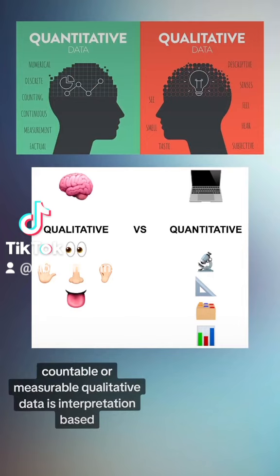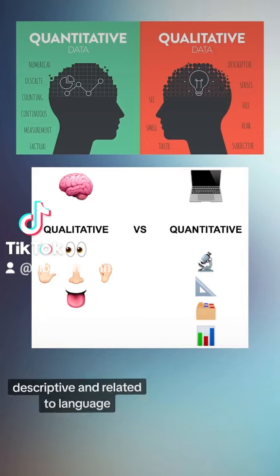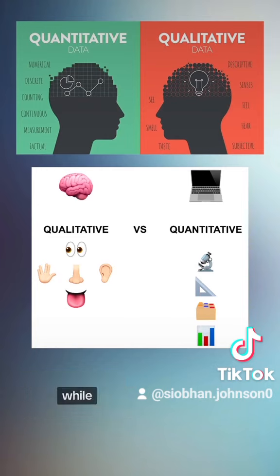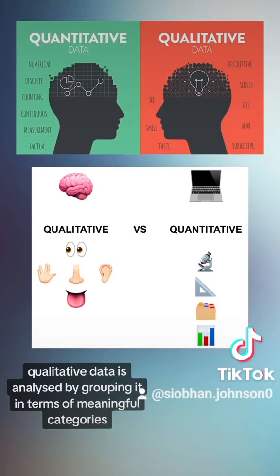Quantitative data is numbers-based, countable, or measurable. Qualitative data is interpretation-based, descriptive, and related to language. Quantitative data is gathered by measuring and counting and analyzed using statistical analysis, while qualitative data is analyzed by grouping it in terms of meaningful categories or themes.